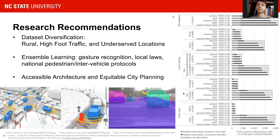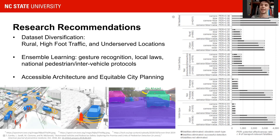We recommend that future researchers look into simplistic models such as ours, but combine them using ensemble learning for more elaborate tasks such as gesture recognition from drivers, communicating with pedestrians, and working with city planners to create more accessible architecture to facilitate adoption of self-driving car technology. Additionally, dataset diversification may play an important role in making better predictions and ensuring this technology is equitably accessible to everyone in society.